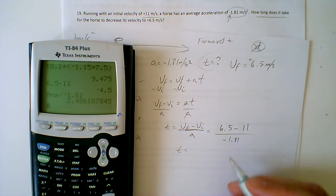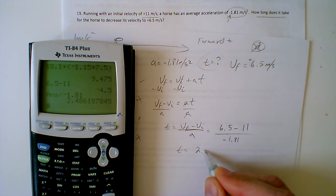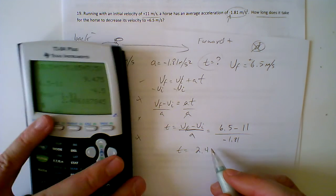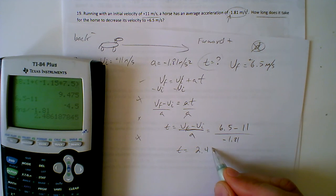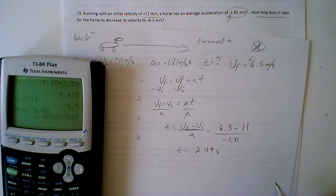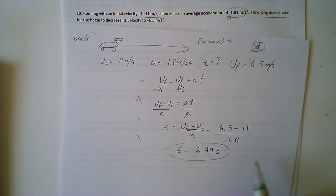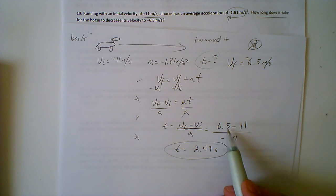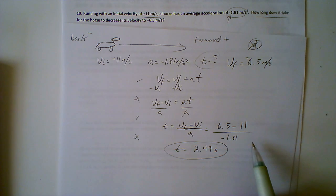And we get the time of 2.49, let's say 9 seconds. So there's our final answer. That's how long it would take a horse to go from here to there if it was changing its velocity, decelerating at negative acceleration of 1.81 meters per second squared.